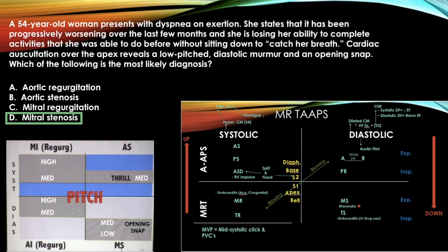The answer is mitral stenosis. This one can be solved with just the pitch chart: low pitch diastolic murmur with an opening snap = mitral stenosis. You can also confirm with Mr. Taps because the question states it's best heard over the apex.